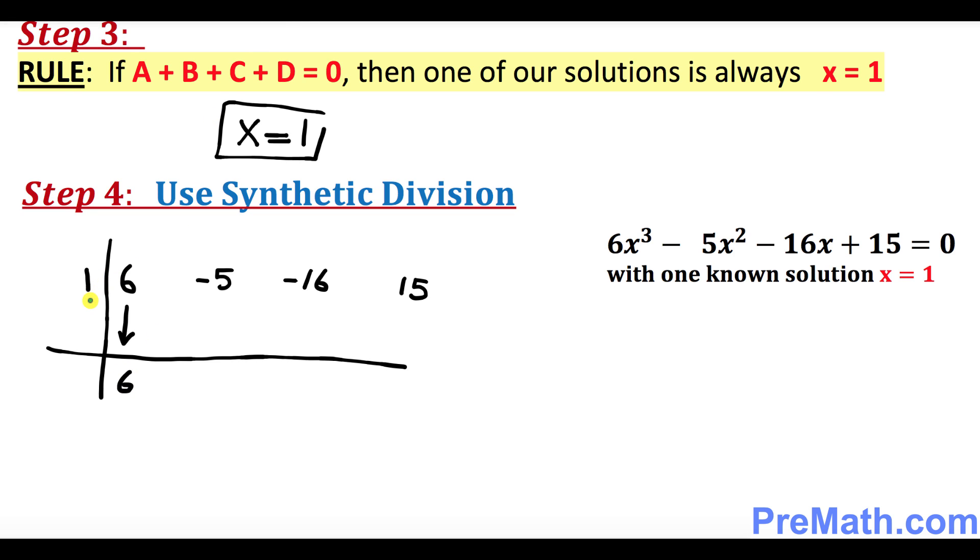Now what we're going to do is multiply this 1 times 6 and just put it right up here. So negative 5 and 6, if you add them up, that's going to be 1. Once again, I want you to cross multiply 1 times 1, that's going to give you 1. Negative 16 plus 1 is going to be negative 15.